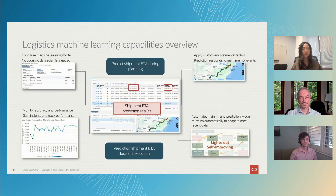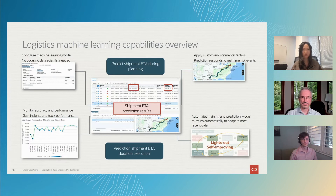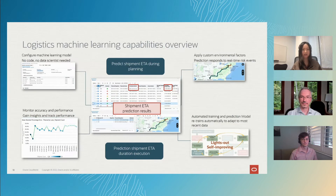Coming to the actual use case of machine learning, our solution has two main pillars. One is the ability to predict an estimated time of arrival, or ETA, during the shipment planning process, so that before a shipment departs, the transportation planner has early access to a predicted arrival time at the destination.